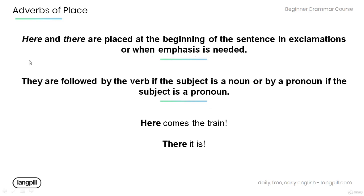Here and there are placed at the beginning of the sentence in exclamations or when emphasis is needed. Note that they are followed by the verb if the subject is a noun, or by a pronoun if the subject is a pronoun. Have a look at the example: 'Here comes the train' — the adverb of place 'here' creates emphasis and is followed by the verb, with 'train' as the noun subject. And in 'There it is,' the adverb of place 'there' is followed by a pronoun, which is also the subject of the sentence.